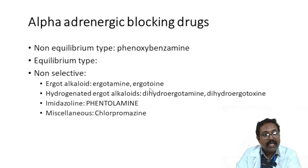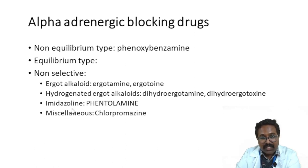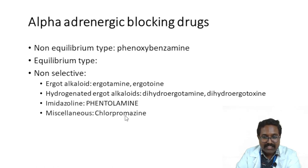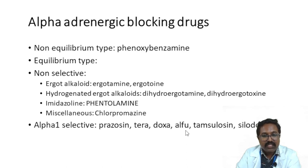Under non-selective equilibrium blockers, you have ergot alkaloids such as ergotamine and ergotoxin, hydrogenated ergot alkaloids like dihydroergotamine and dihydroergotoxin, and imidazolines — under which you have phentolamine. The miscellaneous group includes chlorpromazine, which also blocks the alpha receptor.